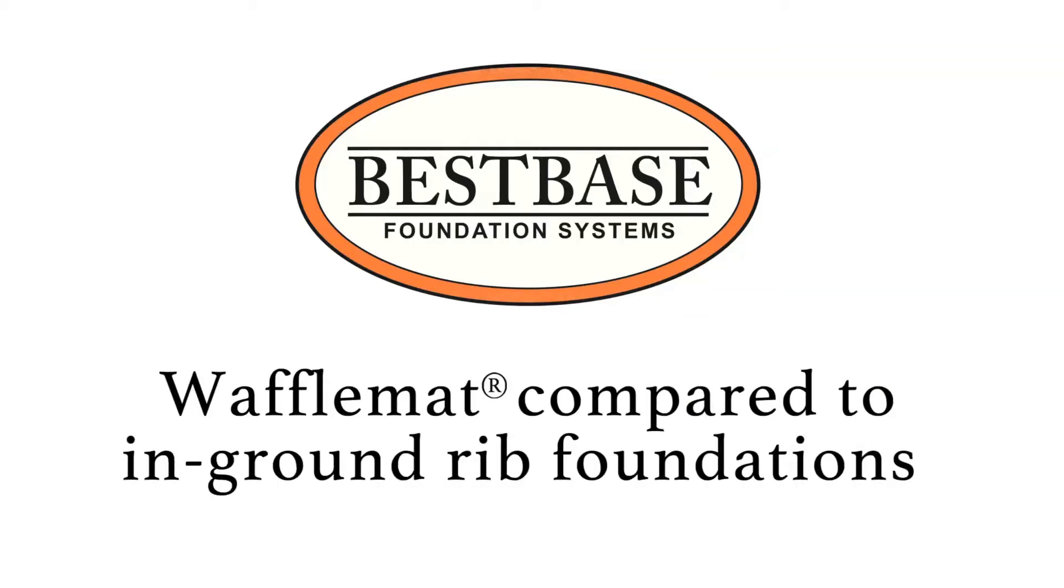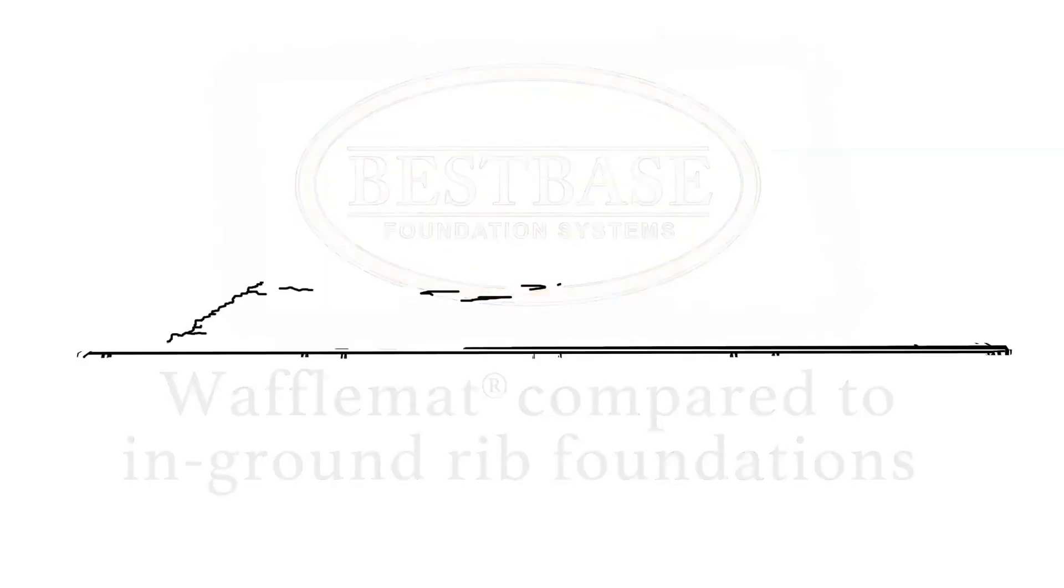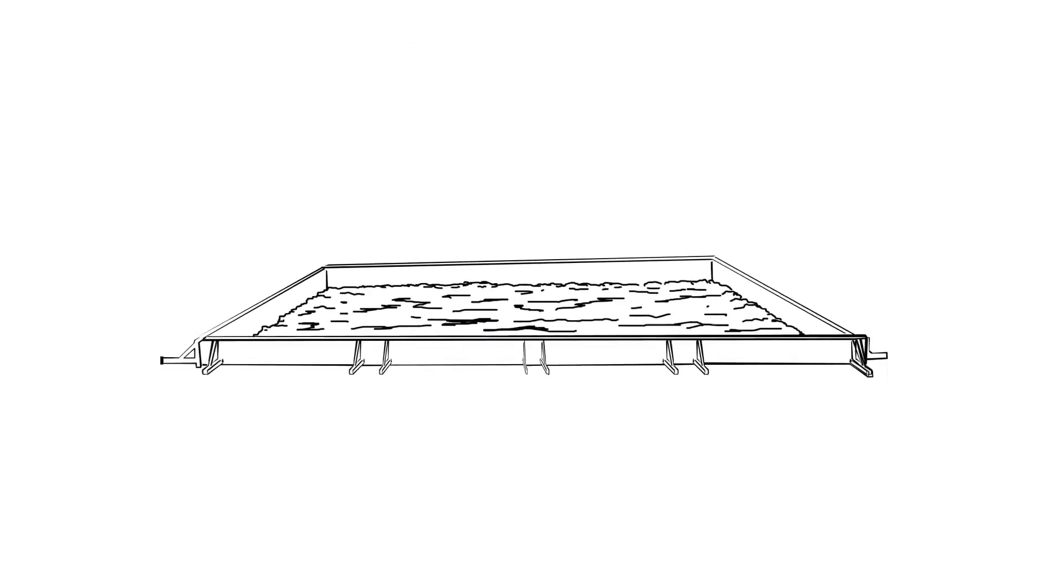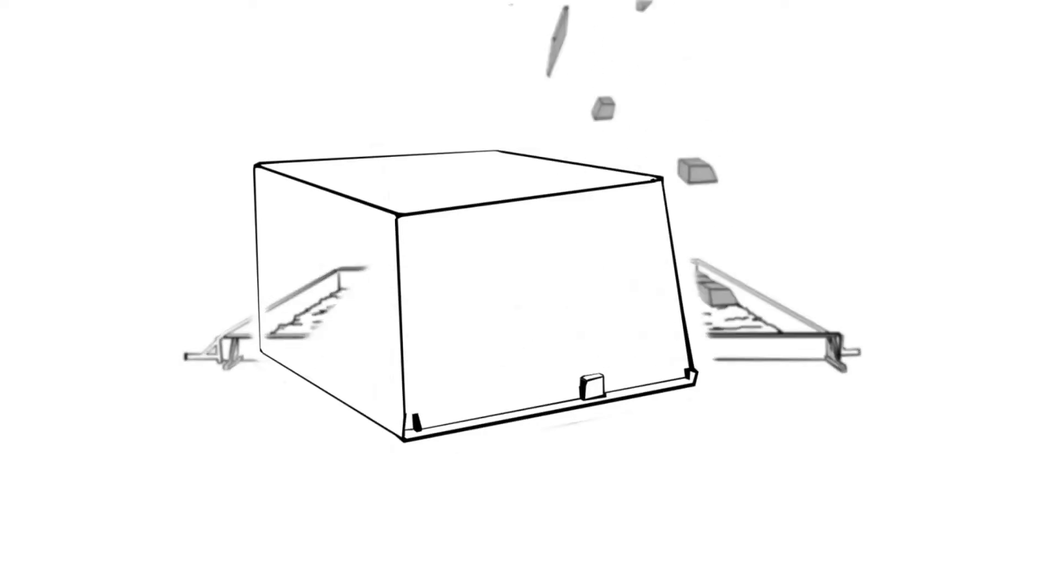In the next four minutes we're going to compare Waffle Mat with the in-ground rib slab and show you the differences in constructability, performance and costs. Waffle Mat is an on-grade post tension rib slab poured monolithically over either eight and a half or 12 inch tall forms we call waffle boxes.